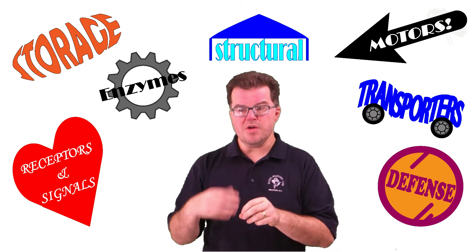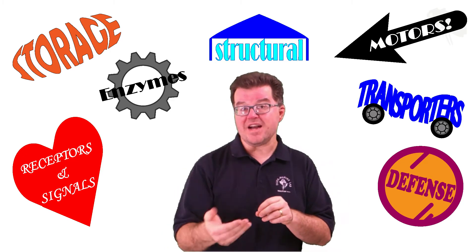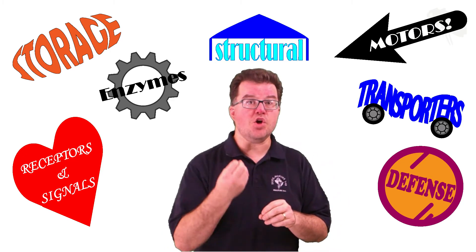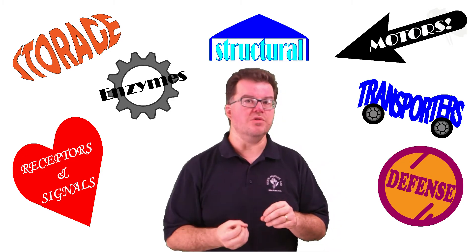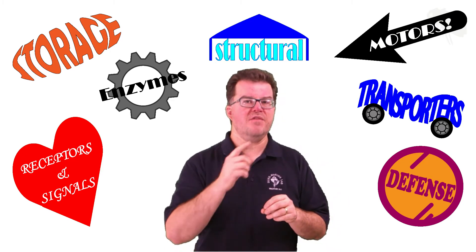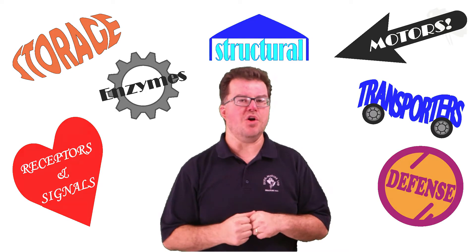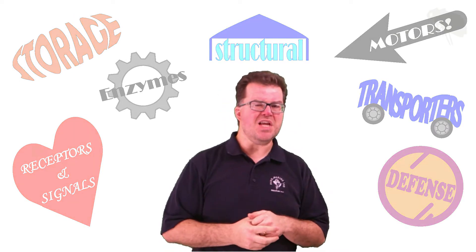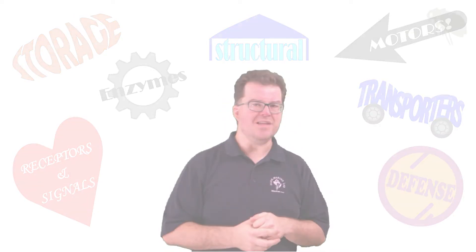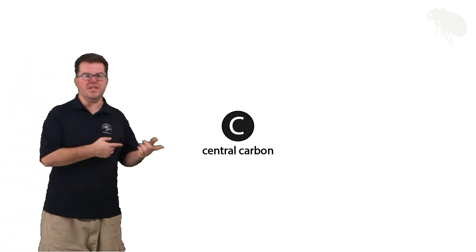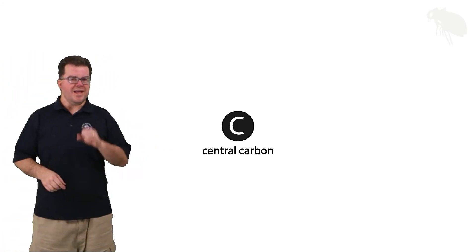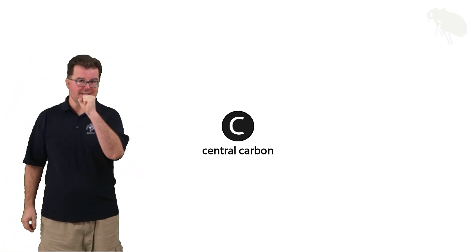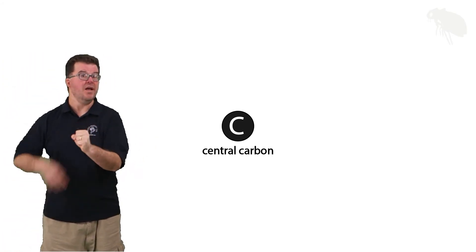So protein structure begins with the fact that proteins are polymers of a monomer called the amino acid. Let's go take a look at an amino acid. Amino acid structure begins with this carbon — at the core of every amino acid is a central carbon.